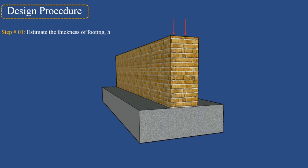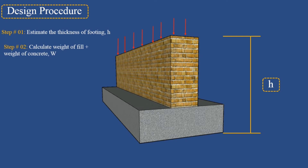Step 1: Estimate the thickness of footing h. The footing thickness should meet shear requirements and provide a minimum effective depth of 150 millimeters. Step 2: Calculate the weight of fill plus weight of concrete w, which is calculated from the corresponding equation.